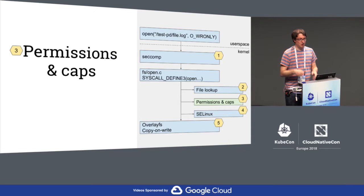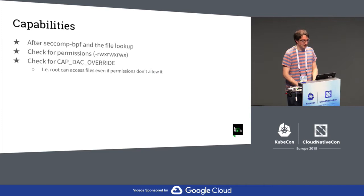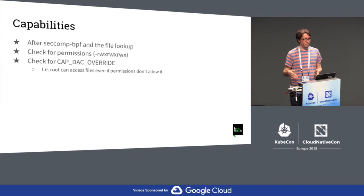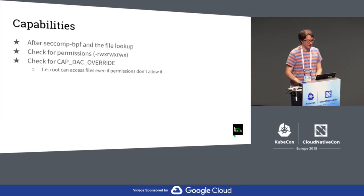Now the open system call passes seccomp, we find which file to open, and now the implementation of the open system call will have to decide whether the permissions and capabilities allow to open the file. The permissions — it's classic Linux or Unix permissions, whether we have read, write or execute access for the user, the group or others. There are also capabilities. Typically the user root, even if a file doesn't belong to root and others don't have access to it, root typically still has access to other files in the system, because root has the CAP_DAC_OVERRIDE capability.